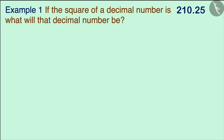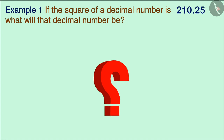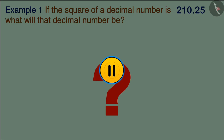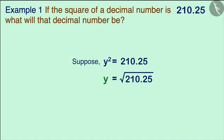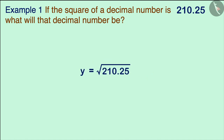If the square of a decimal number is 210.25, can you tell what that number will be? You can pause the video here and solve the question yourself. Suppose the square of the number y is equal to 210.25 — that is, we have to find the square root of 210.25.